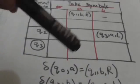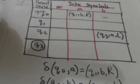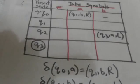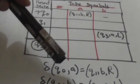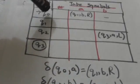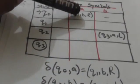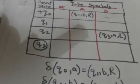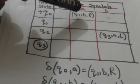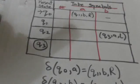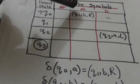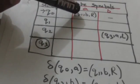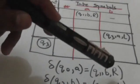So Q1, B, R will be the entry in the table in the row labeled by Q0 and the column labeled by tape symbol A. Here, in this entry, the row is labeled by Q0 and the column is labeled by A, so this entry will be Q1, B, R.